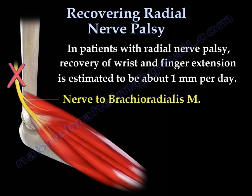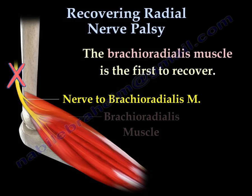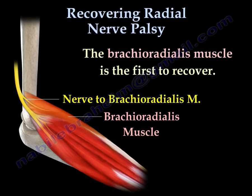In patients with radial nerve palsy, recovery of the wrist and finger extension is estimated to be about 1 mm per day. The brachioradialis muscle is the first muscle to recover. It is difficult to test for the brachioradialis muscle clinically, but EMG is helpful in detecting early recovery in the brachioradialis muscle.